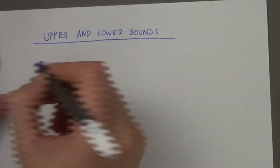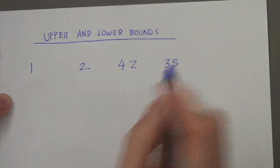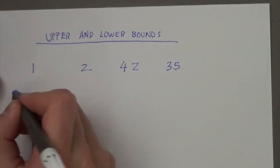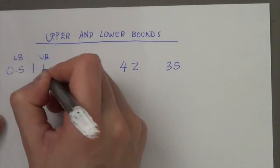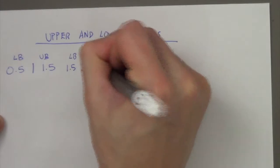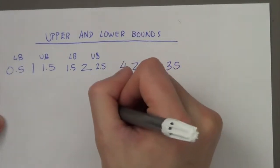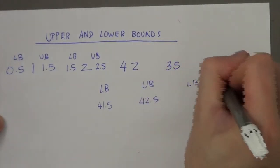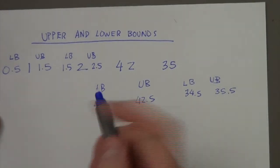We're going to do upper and lower bounds. So the lower bound and upper bound of 1 is: lower bound 0.5, upper bound 1.5. Lower bound of 2 is 1.5, upper bound is 2.5. Lower bound of 42 is 41.5, upper bound is 42.5. For 35: lower bound is 34.5, upper bound is 35.5.